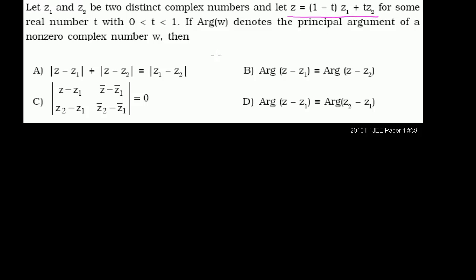Let z1 and z2 be two distinct complex numbers. Let z equal 1 minus t times z1 plus t times z2, for some real number t between 0 and 1. The argument w denotes the principal argument of a non-zero complex number w — that is, the angle between the position vector specifying the complex number in the complex plane and the real axis.